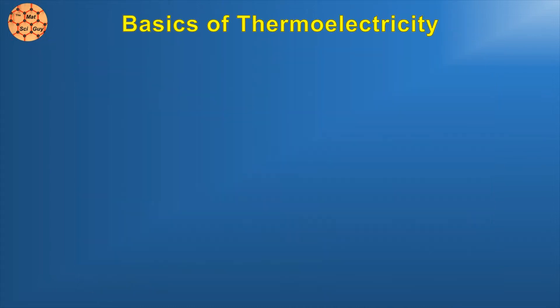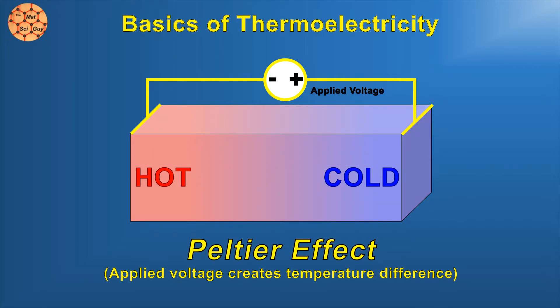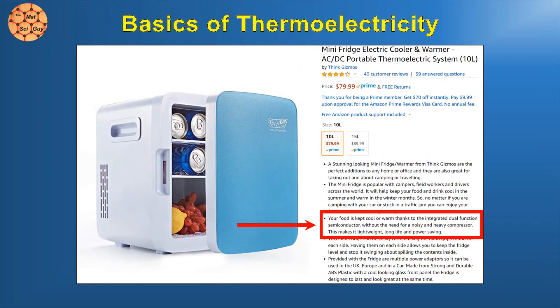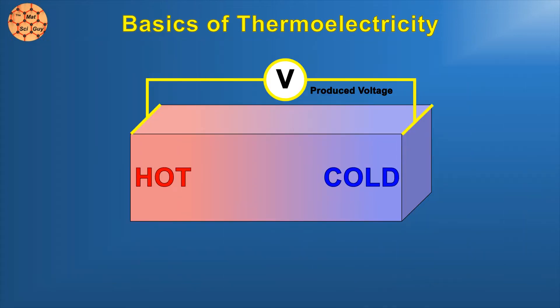The thermoelectric effect describes the relationship between a temperature difference and a voltage in materials. It's possible to produce a temperature difference by applying a voltage. This is called the Peltier effect, and you'll occasionally see this used in applications like portable refrigerators. The opposite phenomenon, where a voltage exists in a material experiencing different temperatures, is called the Seebeck effect.